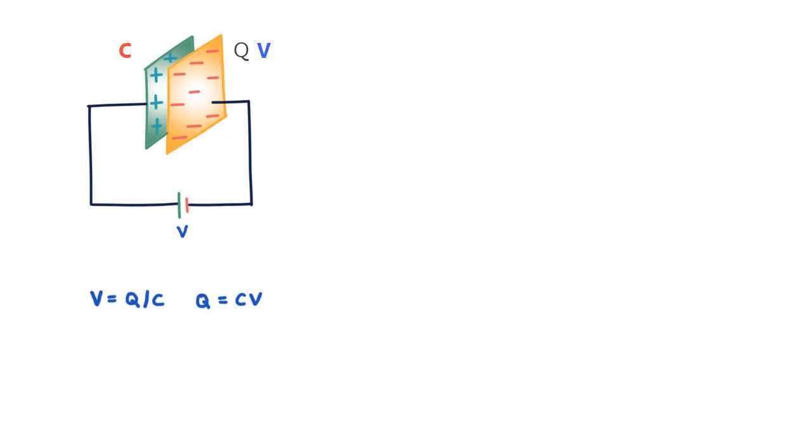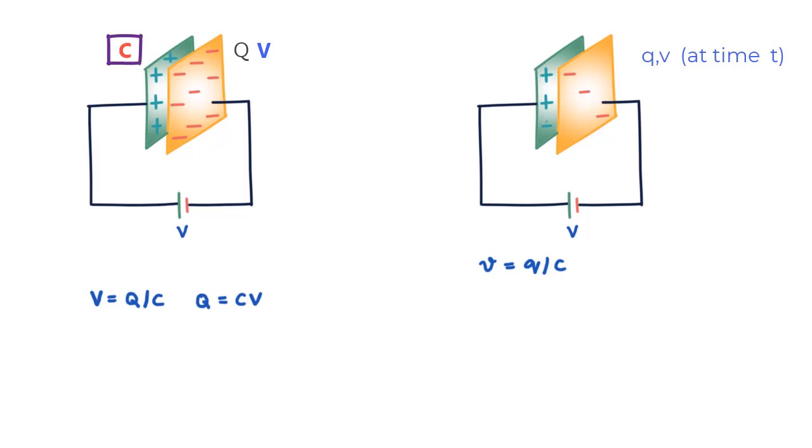But let us consider an instant of time when the charging of the capacitor is happening. Assume that at time t the charge on the capacitor is small q and the potential difference is small v. Then we can say that v = q/C. Remember here that we can take the capacitance as capital C because it is a constant and depends only on the area of the plates and the distance d between them. It has nothing to do with what stage of charging you are at.